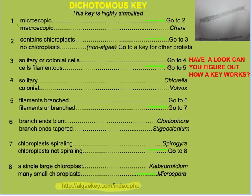The dichotomous key is made up of a series of statements, and each set of statements is aimed at dividing the big group into smaller groups so that you can eventually zero in on the identity of the unknown species. For instance, what we found in the pond is microscopic — not macroscopic — so the first pair of statements asks microscopic or macroscopic, and since our response is microscopic, we are directed to go to number two.